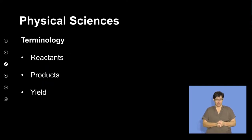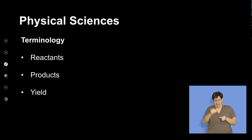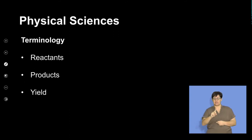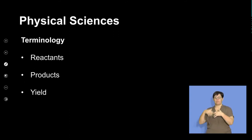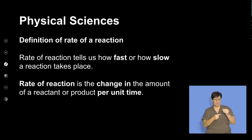The terminology that's important for this lesson includes words like reactant — the substances we need to start a chemical reaction — words like product — the substances that are formed — and yield, which refers to how much of the substances are converted into a new substance. These terms will be used a lot throughout this lesson.